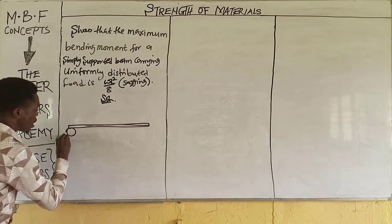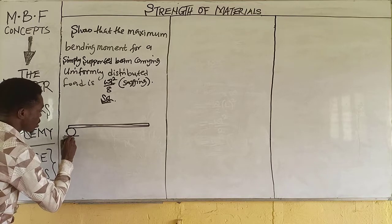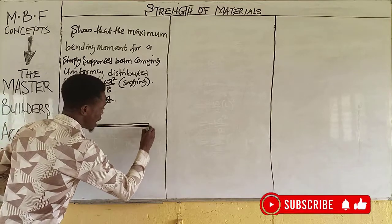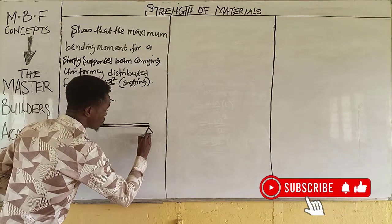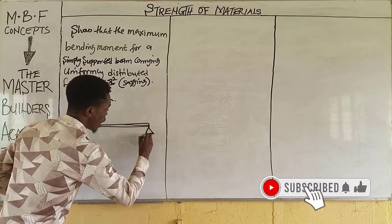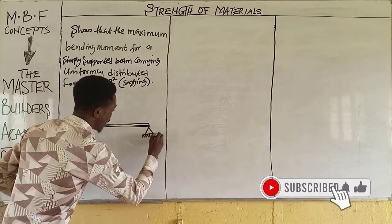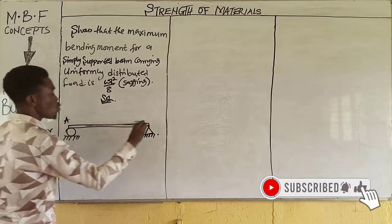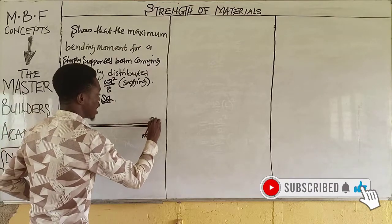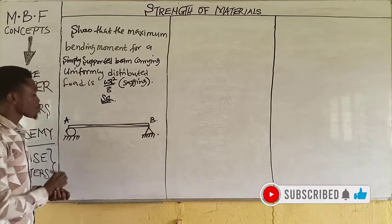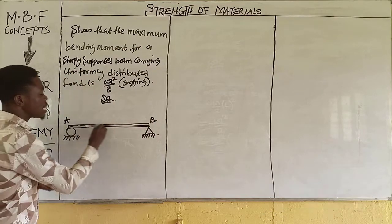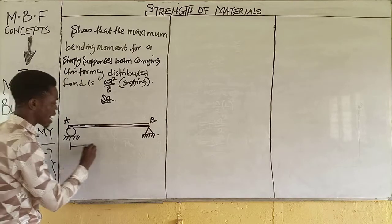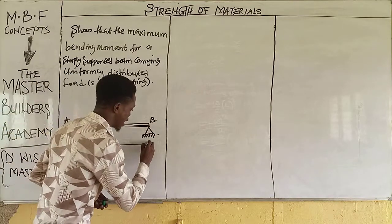We have a roller at one end, then we have a pin at the other end. We call this end A and we call the other end B. This is a simply supported beam that has a span of L.